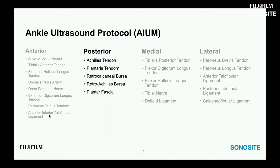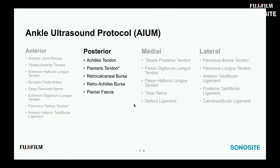Last webinar we covered the anterior ankle. Today we're covering the posterior ankle, which is a fairly simplified list compared to last time. You'll really want to catch the medial and lateral ankle sessions too — the deltoid ligament complex is exciting and difficult to view without scanning tips. Today's structures include the Achilles tendon, the plantaris tendon (anatomically variable), the retrocalcaneal bursa, the retro Achilles bursa, and the plantar fascia.